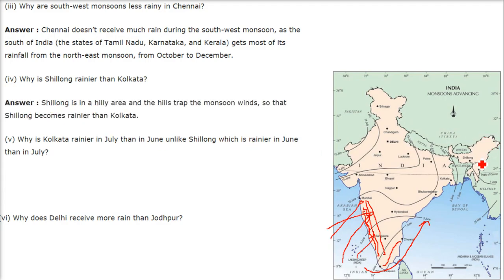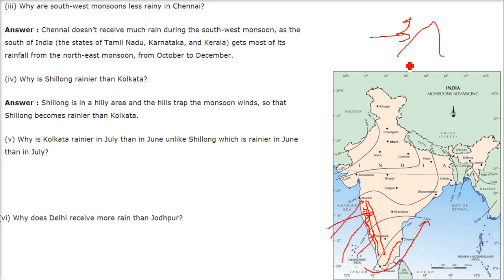Why is Shillong rainier than Kolkata? Shillong is a hilly area — we have the Khasi, Garo, and Garo mountains here. The hills trap the monsoon winds and drain their moisture there. So Shillong becomes rainier than Kolkata.